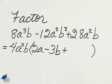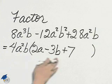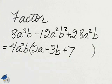Plus 4 divided into 28 is 7. Now, I don't need any more a's, and I don't need any more b's. That 7 is the way it is. 4a squared b times the polynomial 2a minus 3b plus 7.